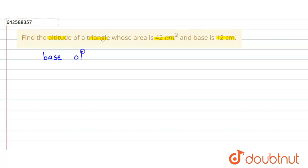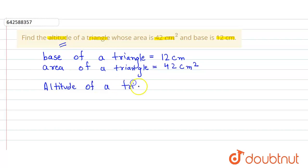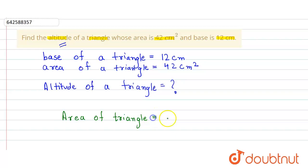Here it is given that the base of a triangle is equal to 12 centimeter, and the area of this triangle is equal to 42 centimeter square, and we have to find out the altitude. So we use the formula for the area of the triangle, which is equal to half into base into altitude.